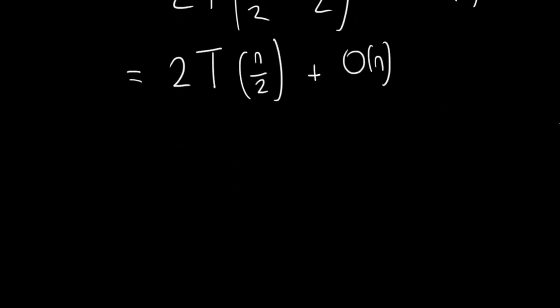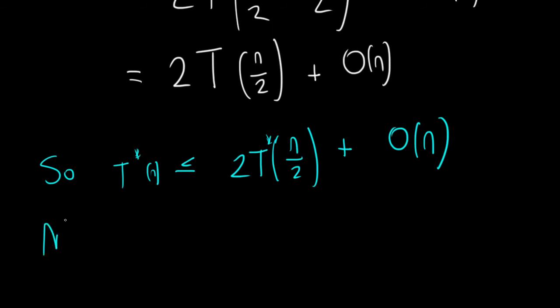So with all this being said over here, we can essentially say T star of n is less than or equal to 2T(n over 2) plus big O of n. So it's all hooked up right there. We actually have a star here. So this, with the master's theorem, right? What was the master's theorem? So I'll return to the master's theorem.